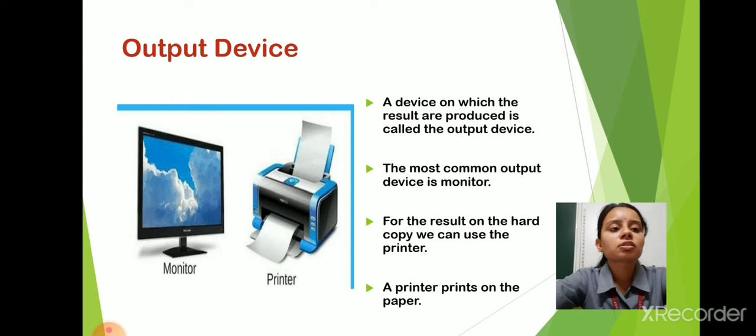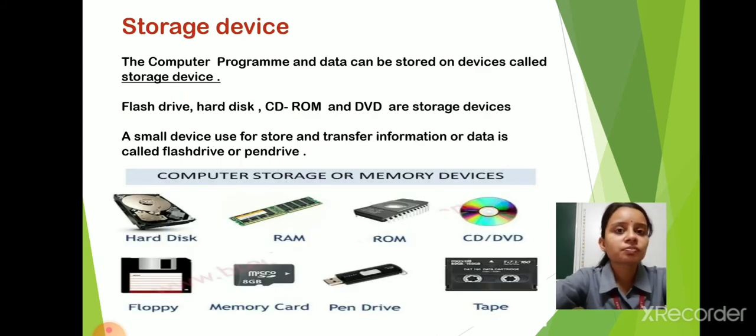Next is storage devices. The computer programs and data can be stored on devices called storage devices. Pen drive, hard disk, CD-ROM and DVD are storage devices. The small device that transfers the information of computer is called flash drive and pen drive. I hope you all understand this.